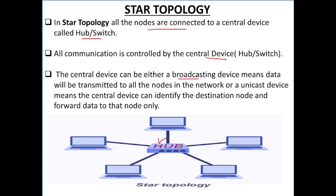The central device can be either a broadcasting device — meaning data will be transmitted to all the nodes in the network. If you are using a hub, it will work as a broadcast device and forward the same data to all computers. And if you are using a switch, it will work as a unicast device — the central device will identify the destination node and forward the data to that node only, not to all devices attached.